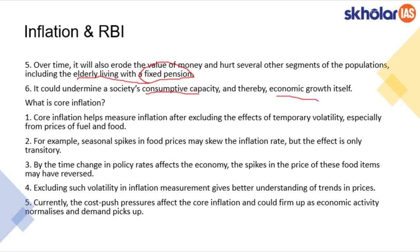So that covers retail inflation — what it is, how it is measured, its impacts, and how RBI tries to control it. Core inflation is a similar measure to CPI, but it excludes some temporarily volatile items such as food and fuel, because there is more volatility in these two items. Removing them gives a proper picture of the inflation trend, which helps in setting policy rates. Currently, cost-push pressures are affecting core inflation and this could firm up economic activity.